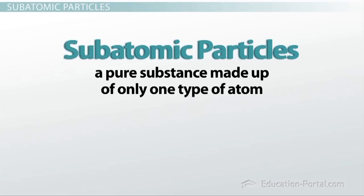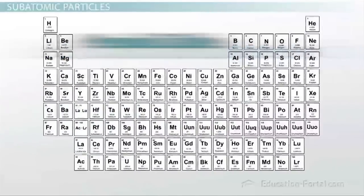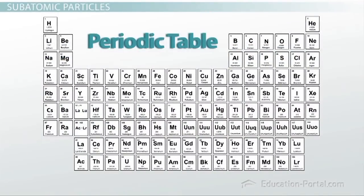This lesson is going to focus on the three main subatomic particles, the proton, neutron, and electron. As we move through this lesson, I would highly recommend having a periodic table in front of you as a reference. The periodic table is an organized reference of all the known elements arranged according to their properties. You will almost always have access to one of these, so it would be a good idea to learn how to use it.